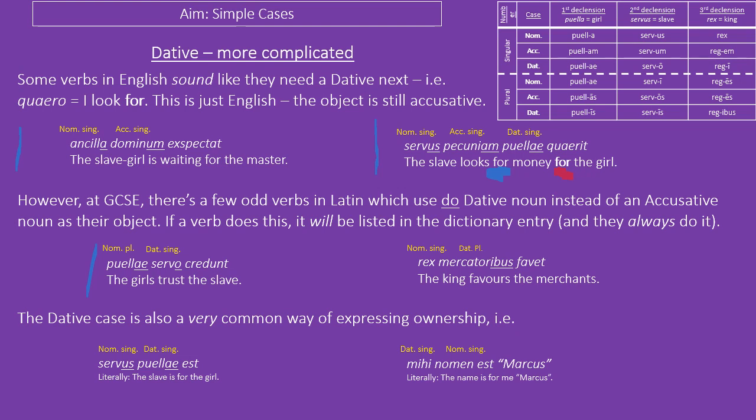Finally, the dative case is also a really common way of expressing ownership. Rather than the English 'the boy has a dog,' in Latin the sentence is more like 'the dog is for the boy.' For example: 'the servus is for the girl' — meaning the girl has a slave. Or, using some more advanced vocabulary: 'nomen mihi est Marcus' — literally 'the name is for me Marcus' — meaning 'my name is Marcus.' This is by far the most common way of expressing what your name is in Latin: mihi nomen est, and then whatever your name is.